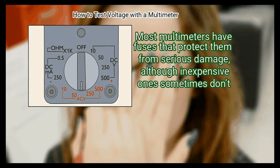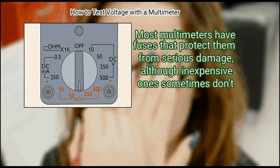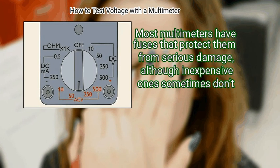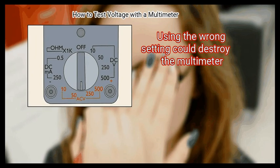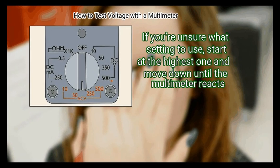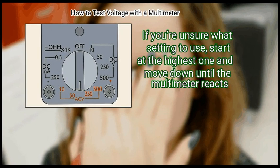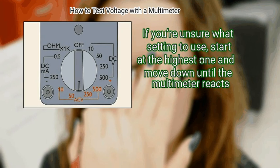Most multimeters have fuses that protect them from serious damage, although inexpensive ones sometimes don't. Using the wrong setting could destroy the multimeter. If you're unsure what setting to use, start at the highest one and move down until the multimeter reacts.